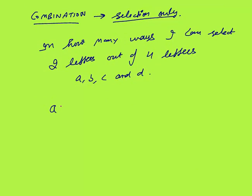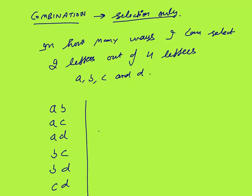For example, in how many ways can I select 2 letters out of 4 letters A, B, C and D? I only need to select, not arrange. I can select A-B, A-C, A-D, B-C, B-D, and C-D. These are only 6 possible ways to select 2 letters out of 4 different letters.